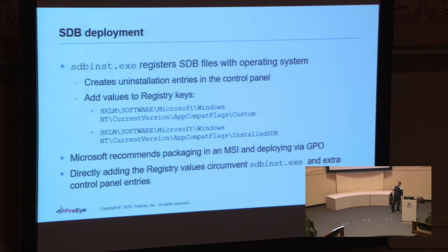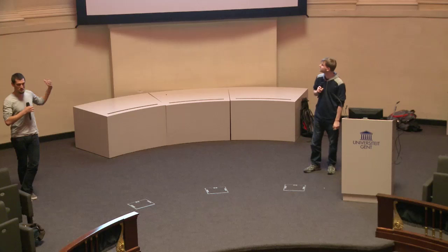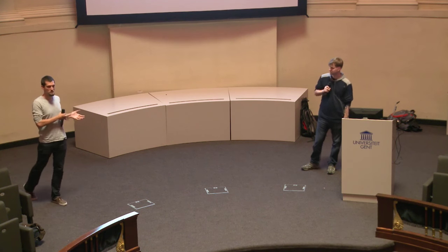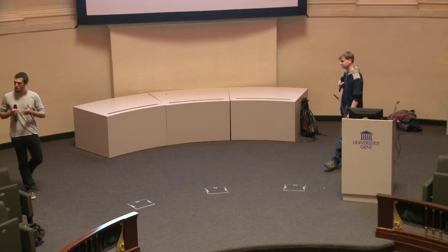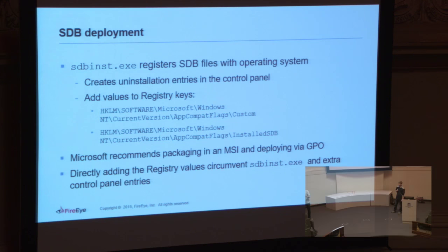Any forensic investigators out there use the application compatibility or app compat cache? You get to see what programs are executing, some things that are loaded and when they're running. Well, that's just a performance feature of this whole infrastructure. The app compat cache is a feature that allows the system to quickly decide whether or not a new program about to execute should be shimmed. It turns out that registry key has to do with this whole infrastructure we're talking about right here.